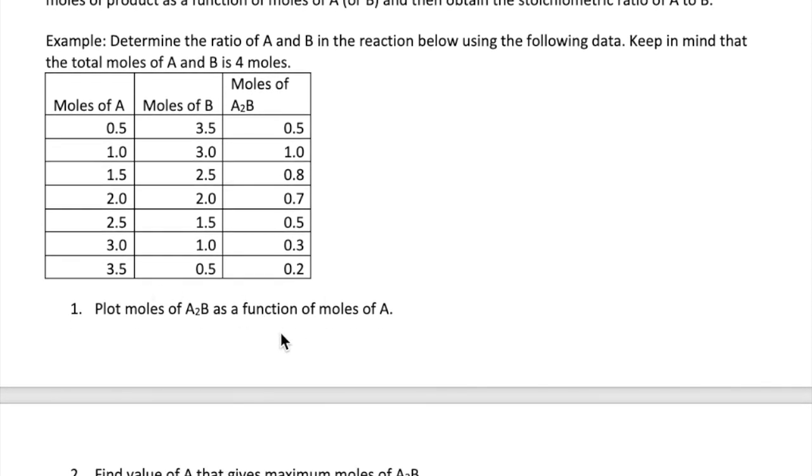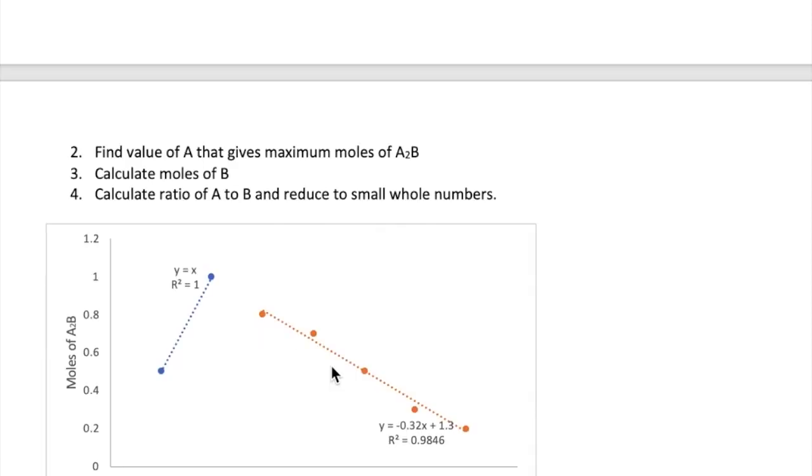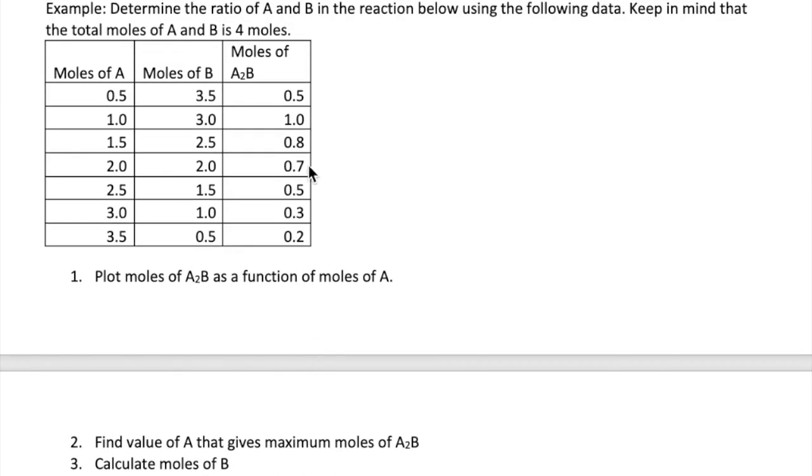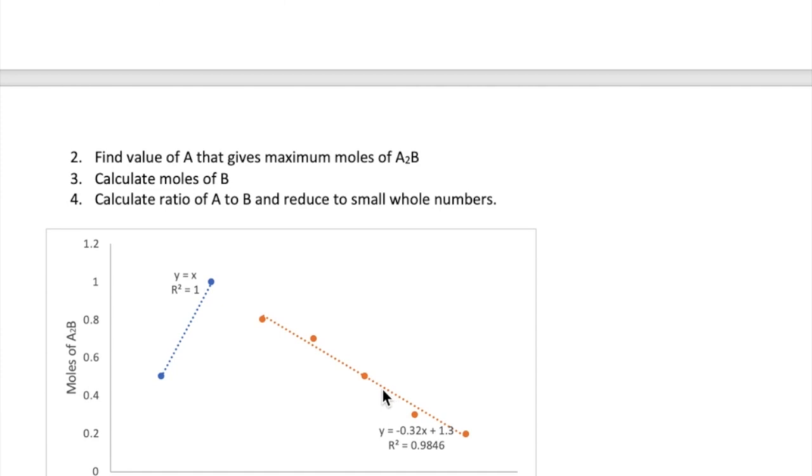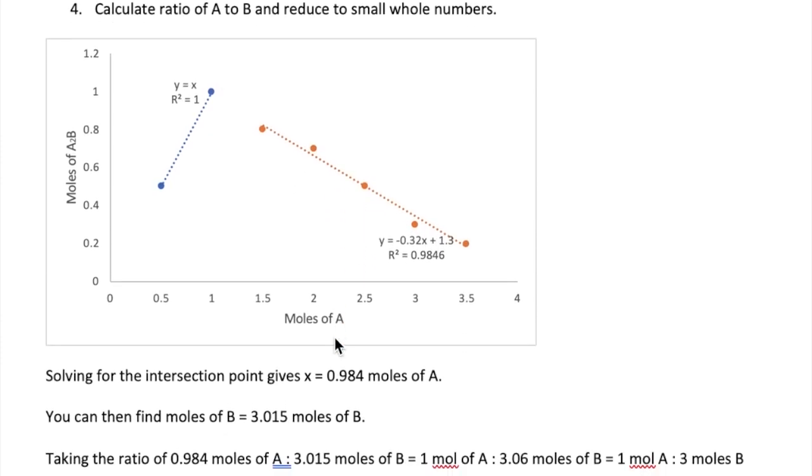We're going to then plot that data of the moles of product, which we can measure, and I will talk about how to measure these numbers later, as a function of the moles of A. The plot is shown right here for this data. We then use the fitted line equation, which is also given here from Excel, and we're trying to solve here for the number moles of A that gives us the maximum amount of product. If we do this for these two plots right here, we get x equals 0.984 moles of A.